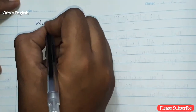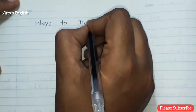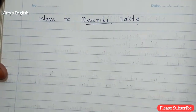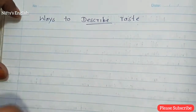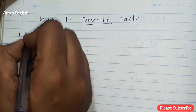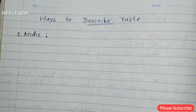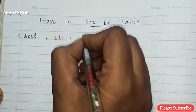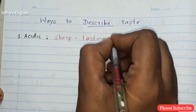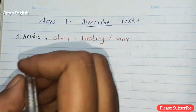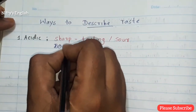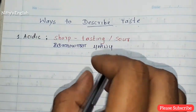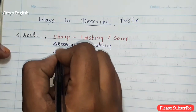Ways to describe taste. The first one is acetic — meaning sharp, a bursting sourness. In Tamil, acetic means kadumayana pulipu. For example: acetic wine.